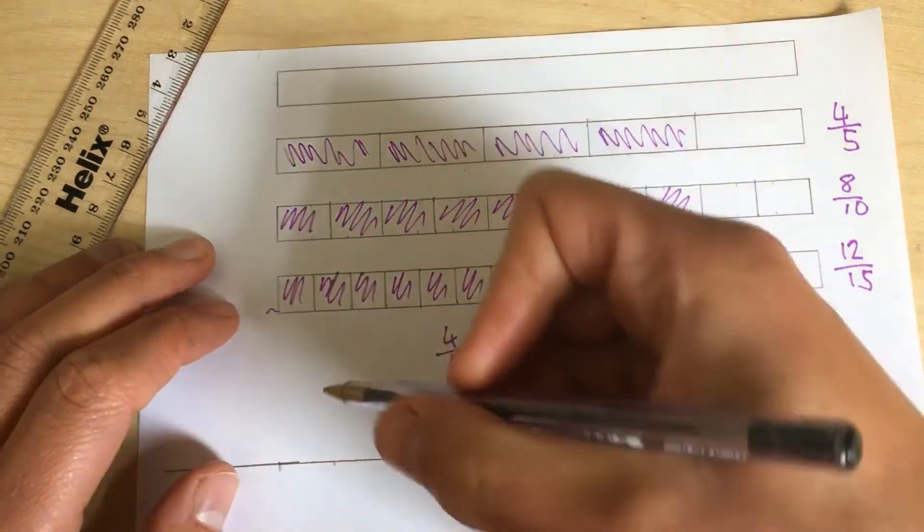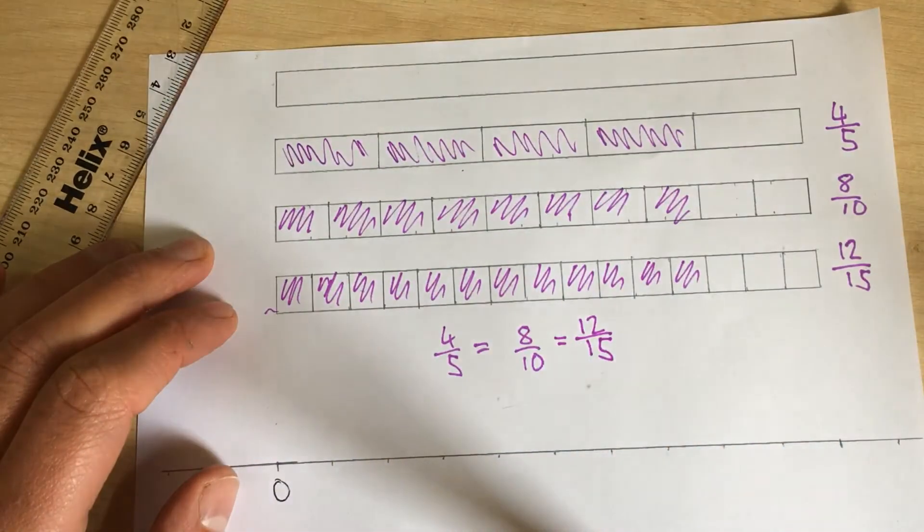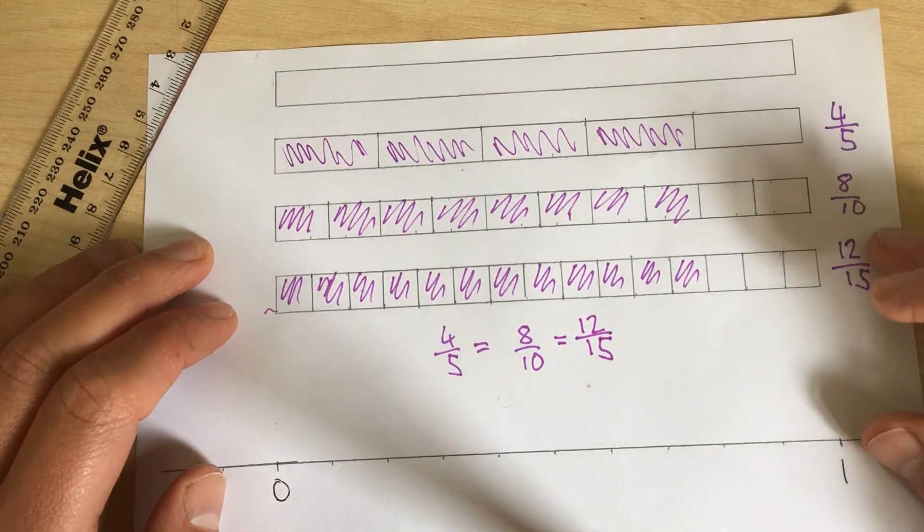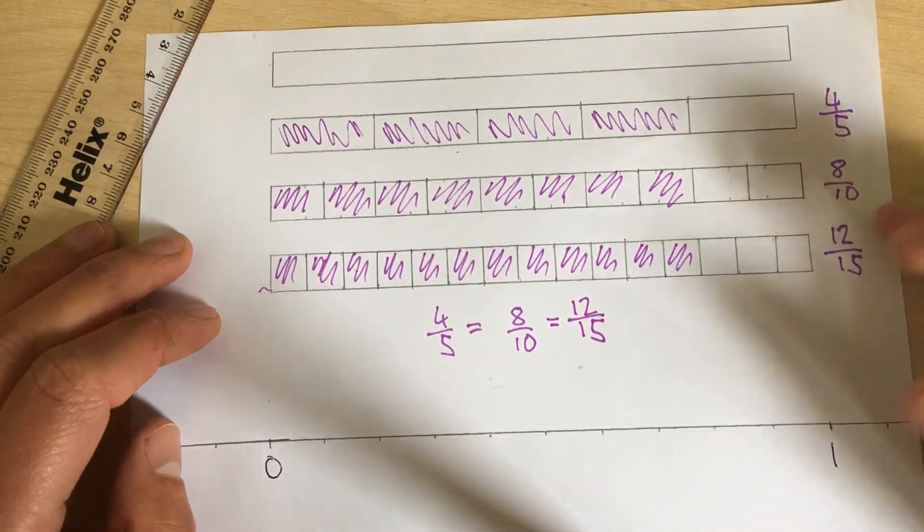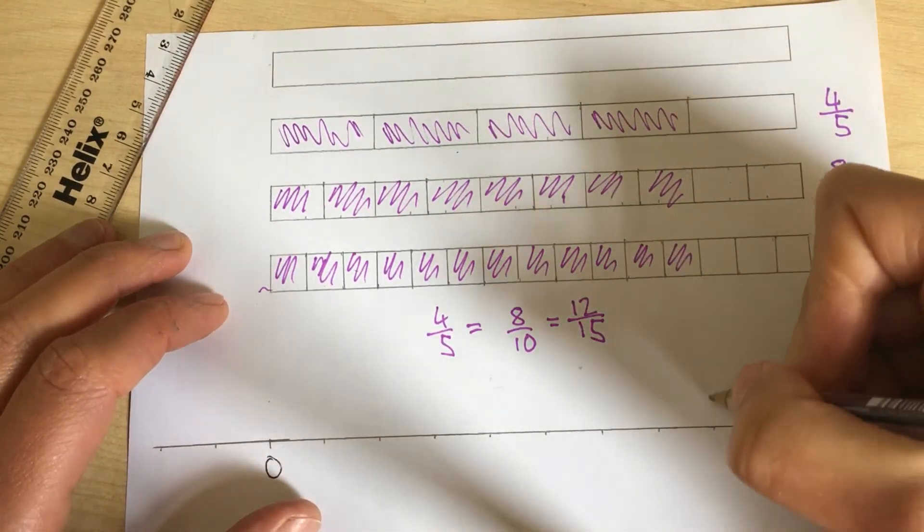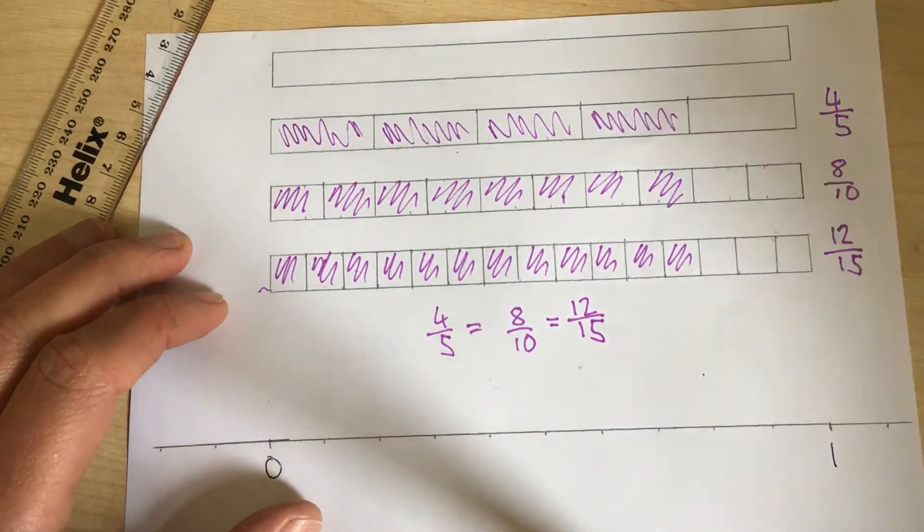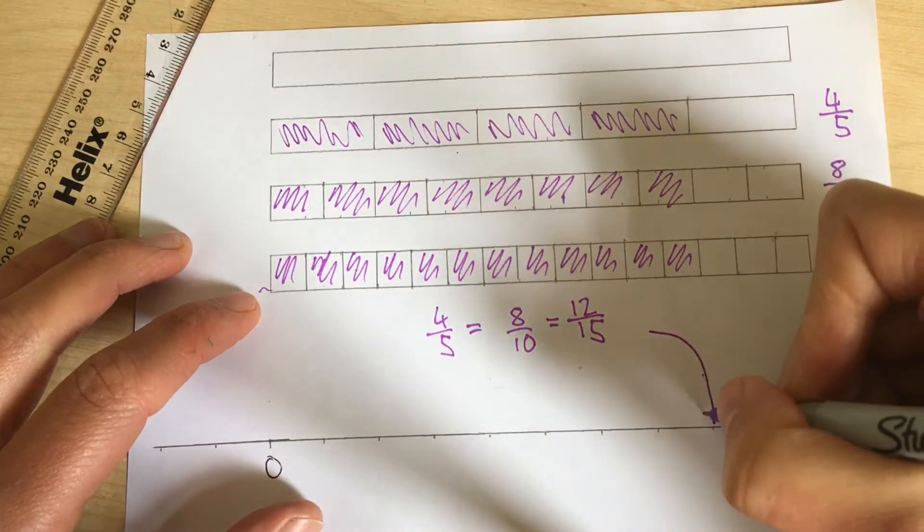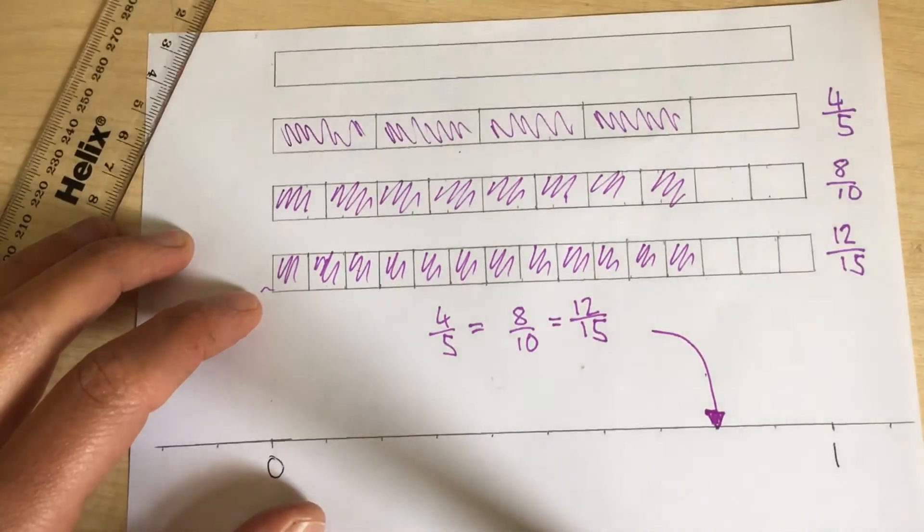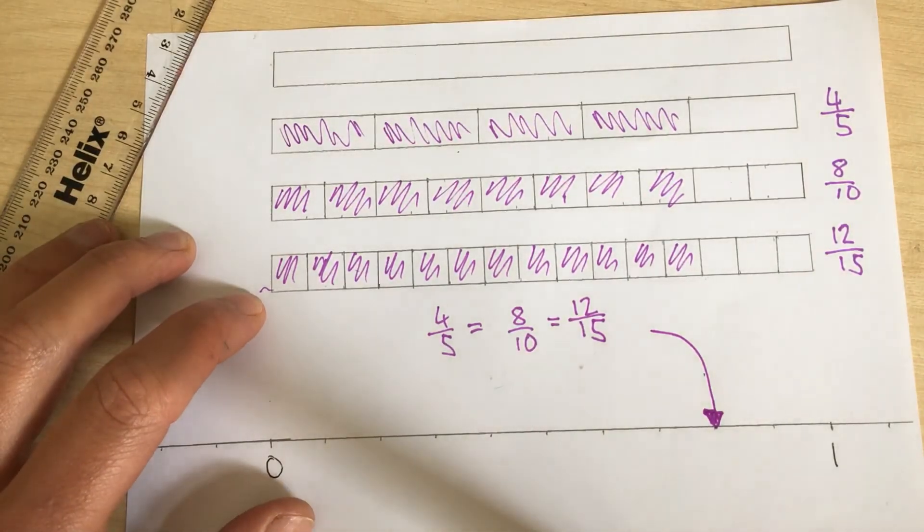Check it out on this number line. Let's say down here is zero. And then all the way over here is one whole. Well, each of these fractions are at the same position on the number line right here. Let's change to the purple pen right here on the number line. They have the same numerical value.